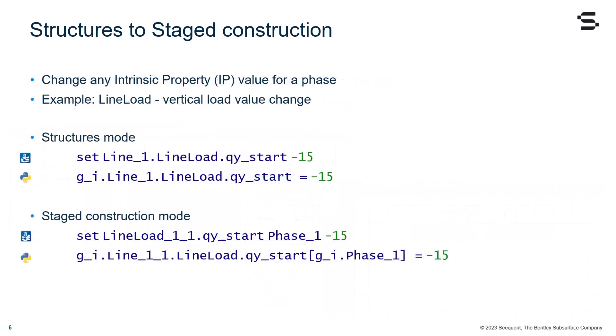When adding the line load in structures you can already change the value for the vertical component. By changing the value in the graphical user interface to minus 15, the Plaxis command line reports it directly. The command is set line1.lineload.qy_start minus 15. Below the Plaxis command shown here you can see the Python equivalent.